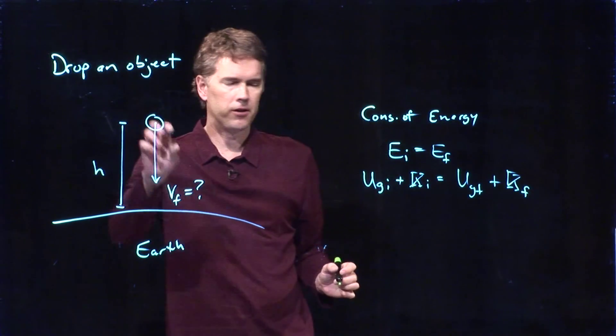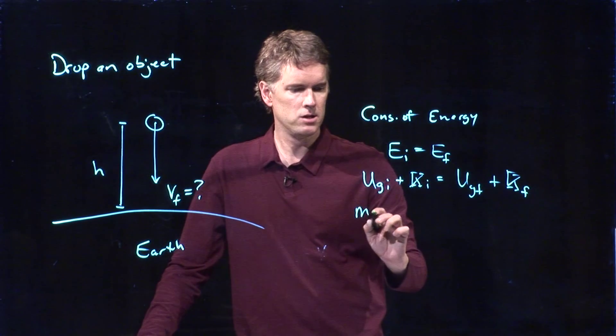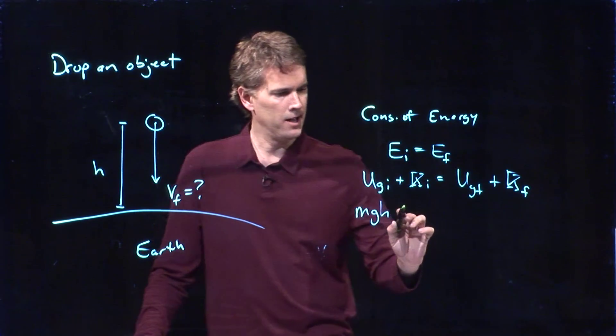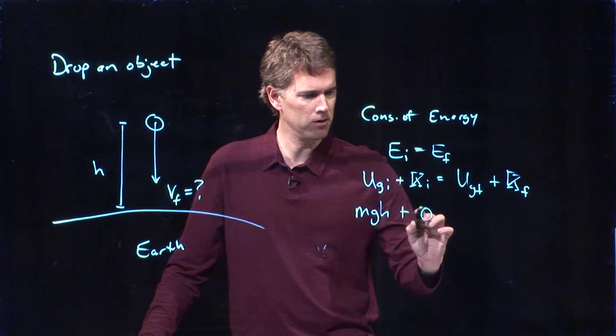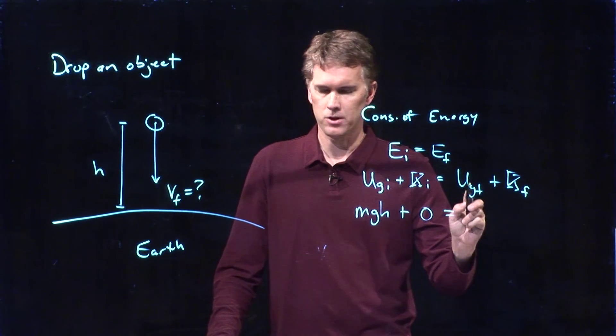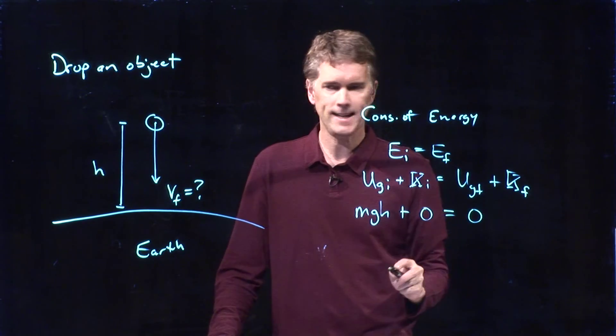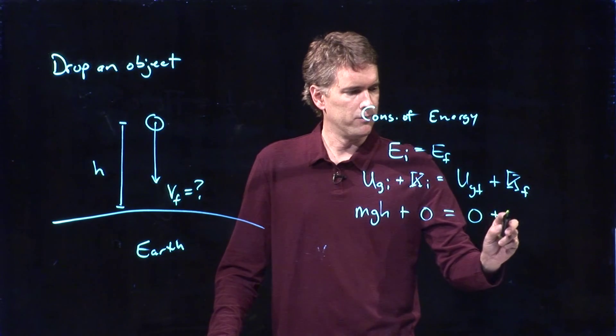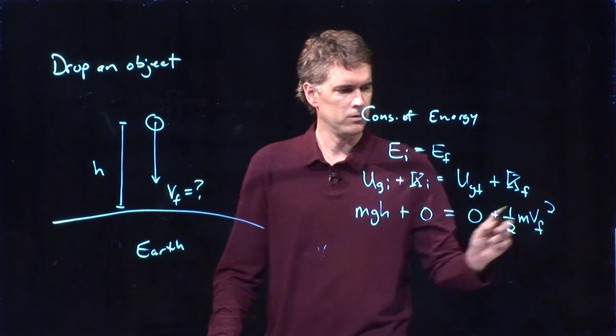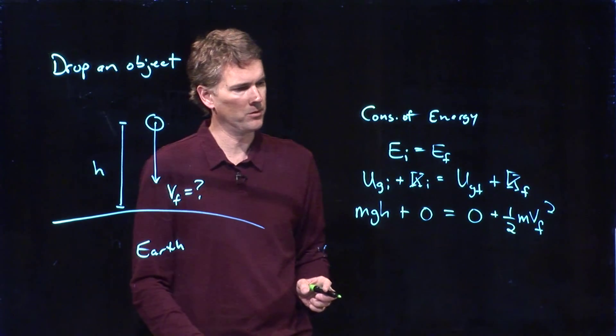If we're starting up at a height h, then the potential is just mgh. If we're starting at a speed of zero, that is zero. If we are ending at the ground, final height is zero. And if we're moving just before we hit the ground, we've got kinetic energy of one-half mvf squared.